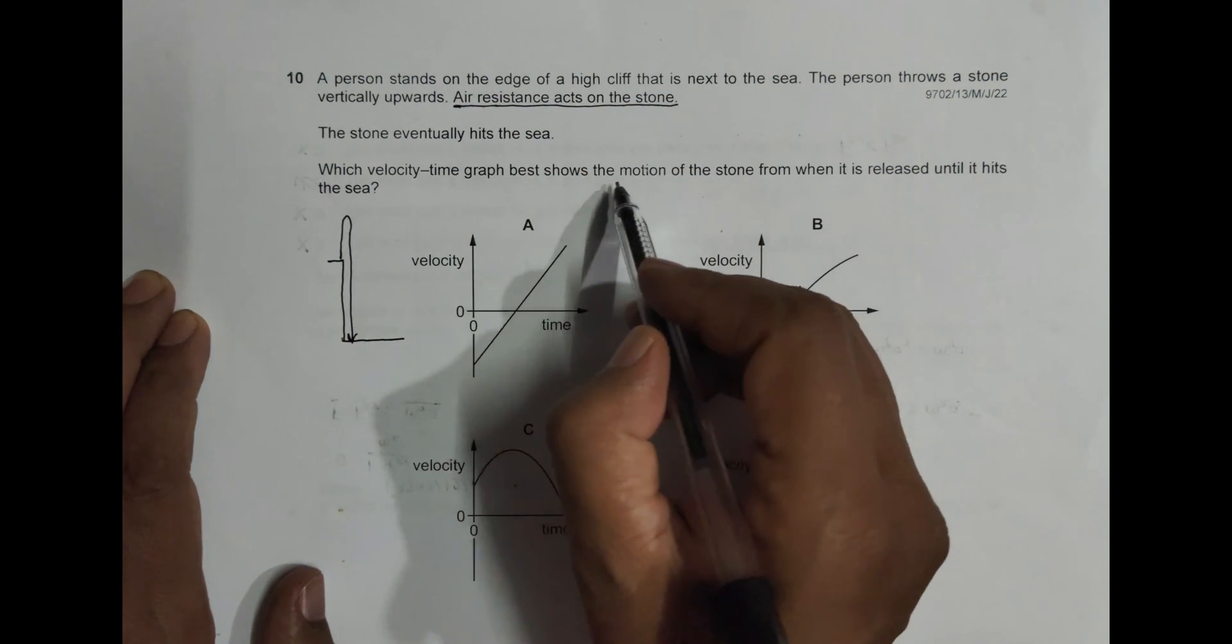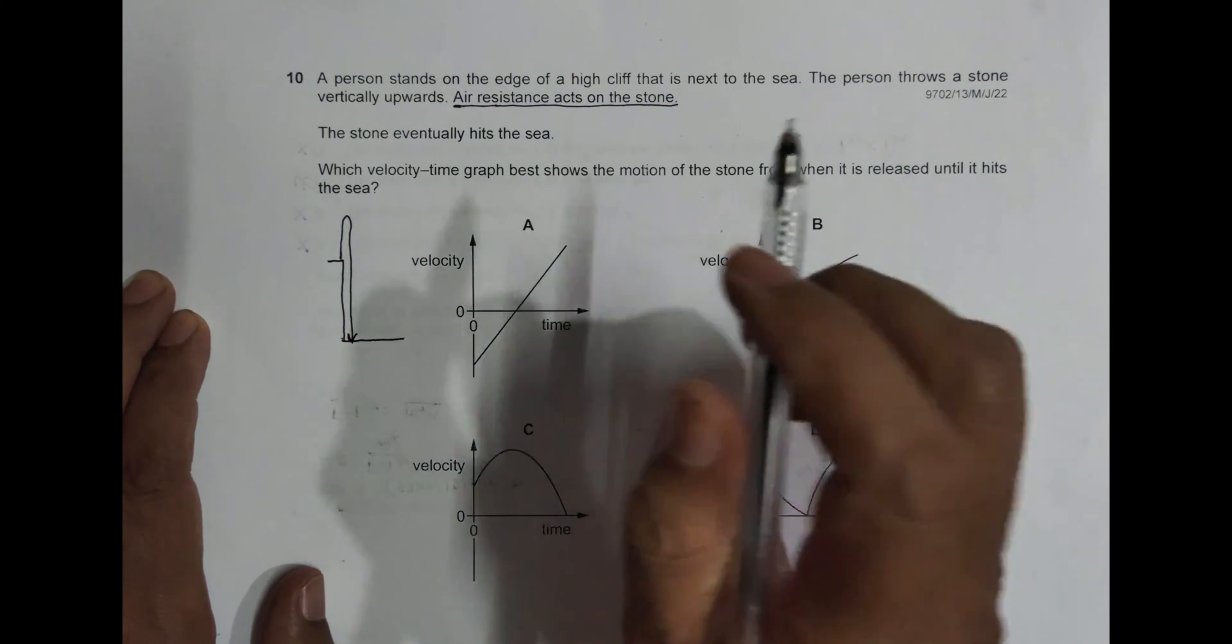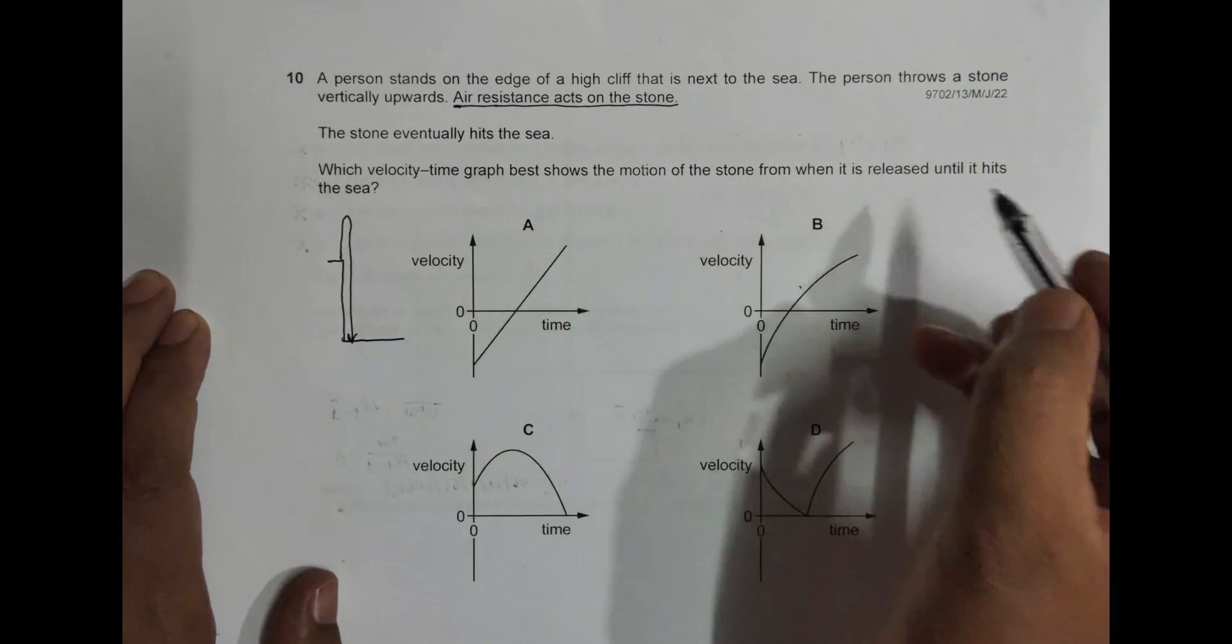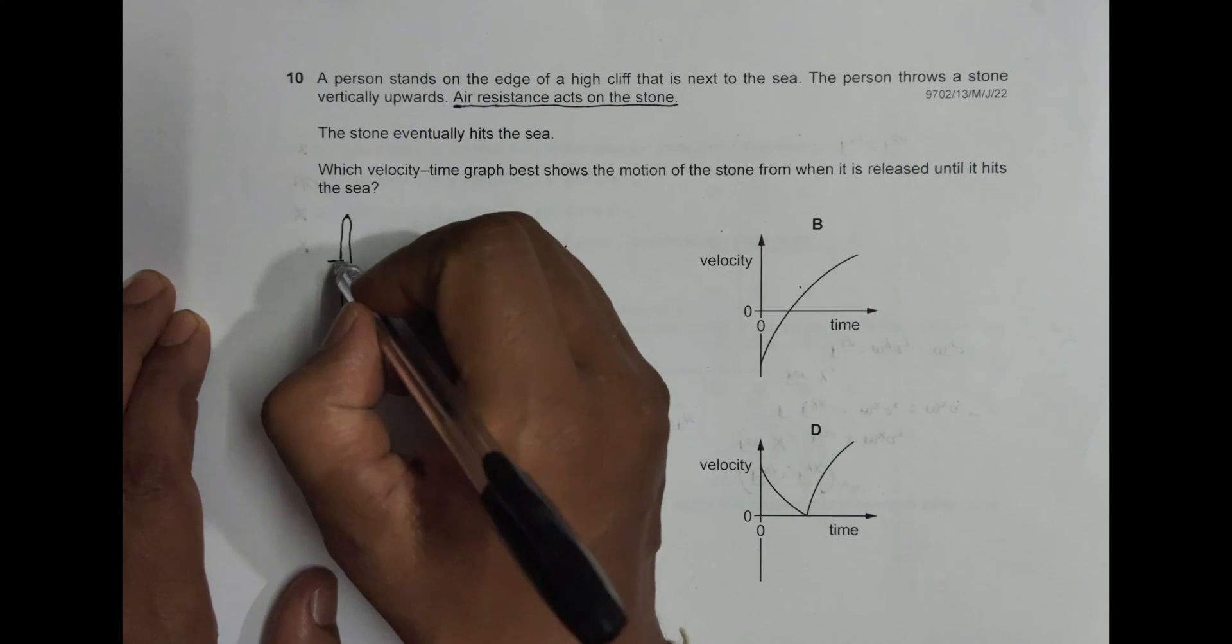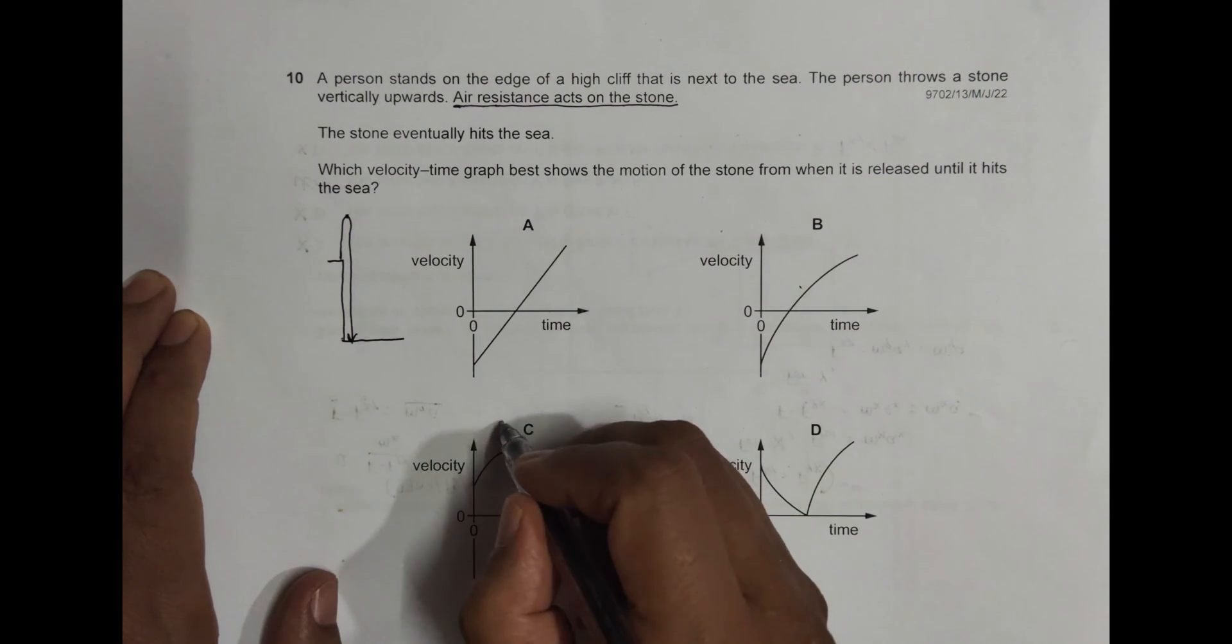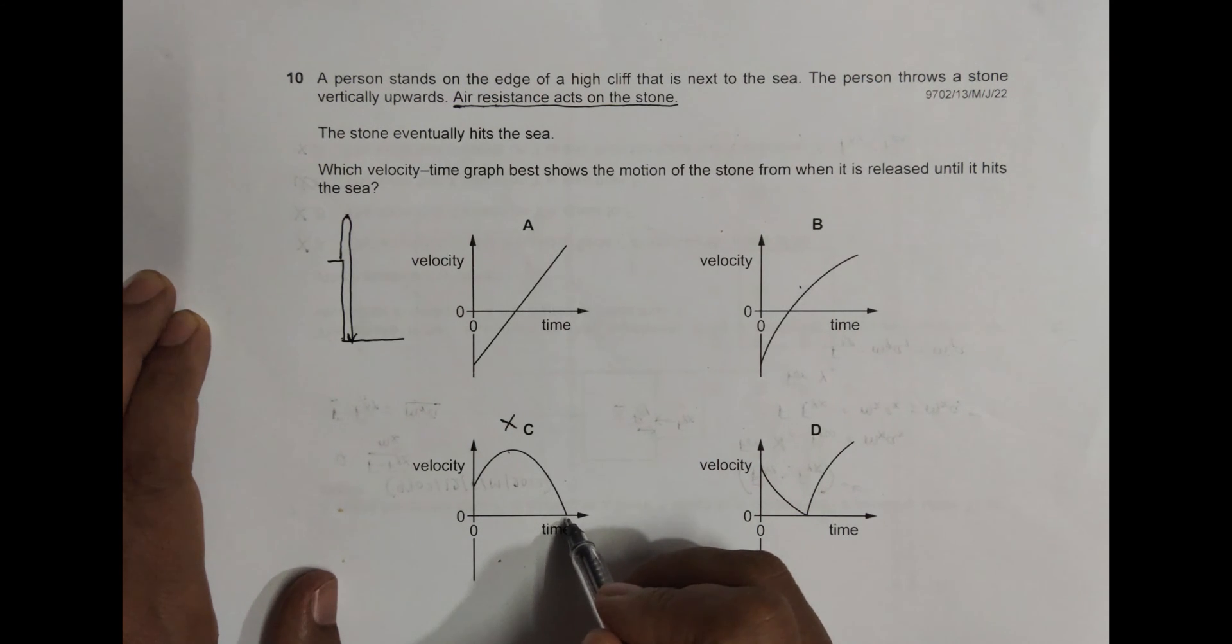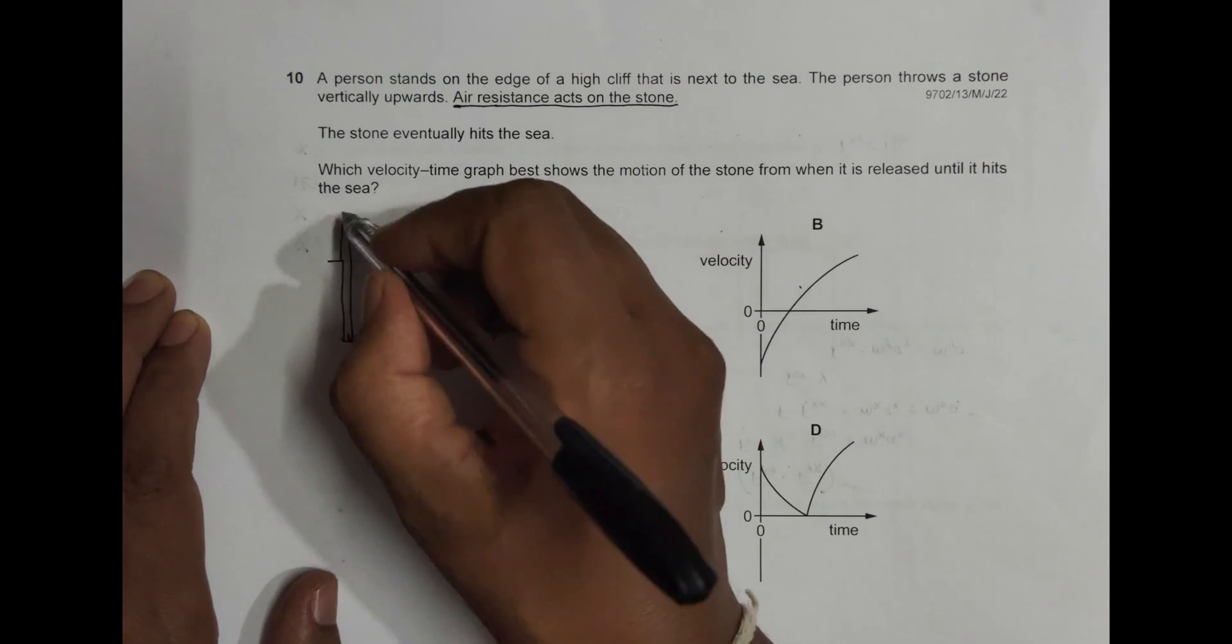We need to find the velocity-time graph showing the stone's motion from release until it hits the sea. One thing to remember is that when it reaches the highest point, v becomes zero because the body stops for a moment. Going through the graphs, this option is incorrect because v is never zero except at the very end. It has to be zero somewhere in the middle, so this is incorrect.